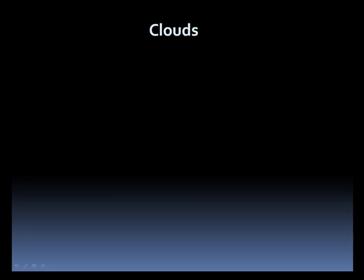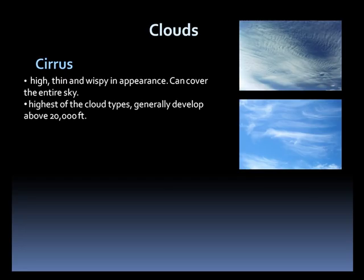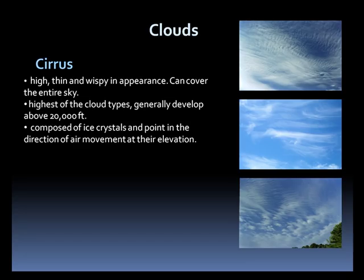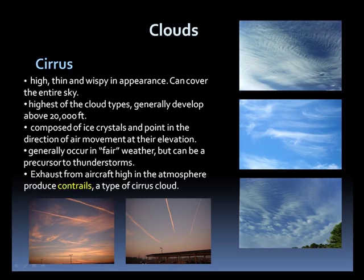Cirrus clouds are the highest of the cloud types, mostly developing above 20,000 feet. Wispy and thin in appearance, they can cover the entire sky. They are composed entirely of ice crystals and point in the direction of the air movement at their elevation. Mostly they occur in fair weather but can be a precursor to thunderstorms. Exhaust from aircraft high in the atmosphere produces contrails, which is a type of cirrus cloud.